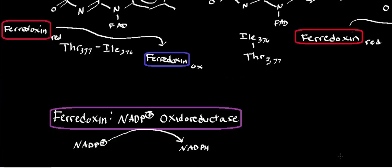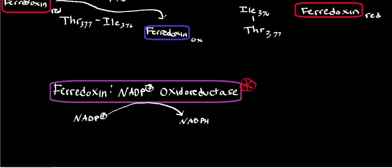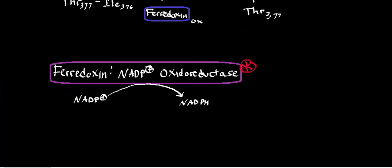Welcome back to the playlist on photosynthesis. In the last video, we looked at basically the physiology of how we get reduced ferredoxin. And we mentioned that ferredoxin can feed into this enzyme, called ferredoxin NADP+ oxidoreductase. It can feed the electrons into this enzyme, and what this enzyme produces from NADP+ is a very special molecule — a reduced coenzyme called NADPH.